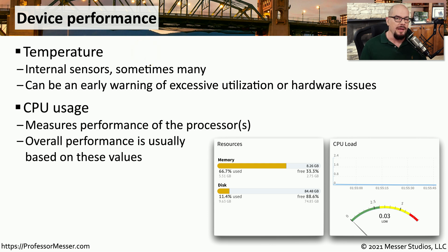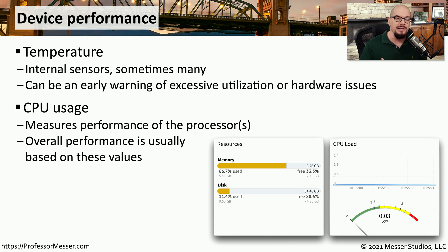Another important metric is the utilization of the central processing unit, or CPU. This determines how much work the device is doing. If you notice that the CPU utilization is increasing, it could be that this device is under a heavier load. This is often the first metric we look at because it gives us a broad view of how a particular device might be performing.